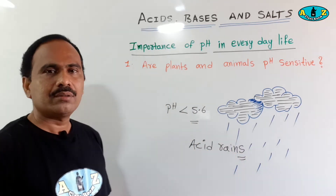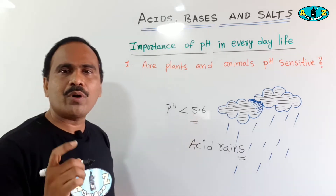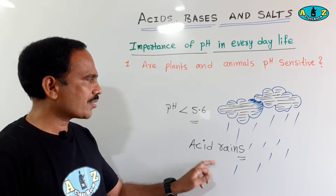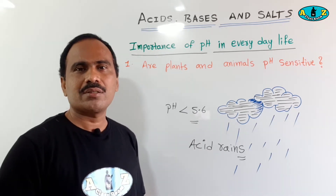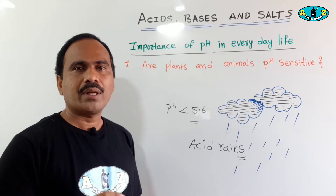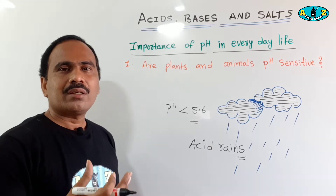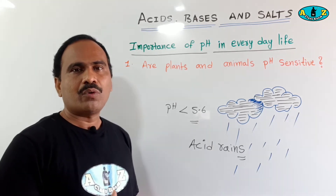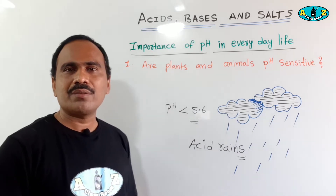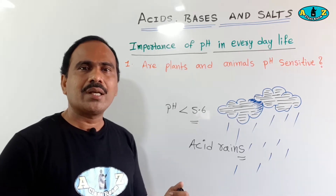Very important: if the pH value of rainwater is less than 5.6, that rain is called acid rain. Acid rain is very dangerous. If acid rainwater flows through rivers, lakes or canals, it can increase the acidic nature of the water in those water bodies, which is very dangerous to aquatic organisms and other plants and animals.